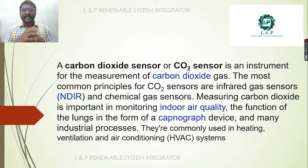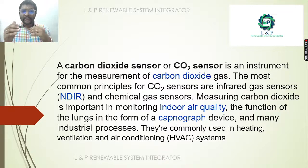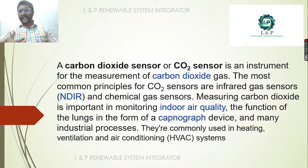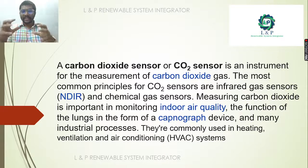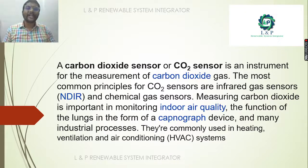There are certain devices called capnograph devices, which can be in the form of a lens. The basic thing is that it is used to monitor the indoor air quality, and it is most commonly used in heating, ventilation, and air conditioning systems.